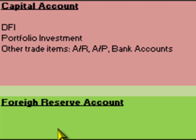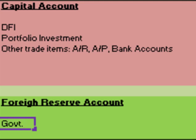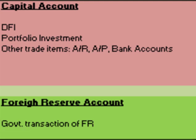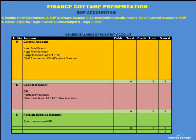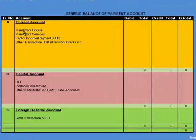The third account is the foreign reserves account, and it represents changes in the official reserves of the government. If the government makes a transaction in foreign reserves, it would be recorded in the foreign reserve account — representing government transactions of foreign exchange reserves in the form of foreign currencies or gold. Inflows due to exports of goods, services, factor income, gifts, grants, direct foreign investments, or portfolio investments are all recorded as credit items with a positive sign.